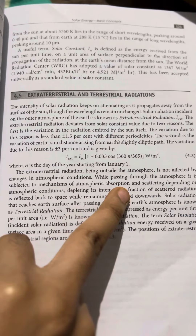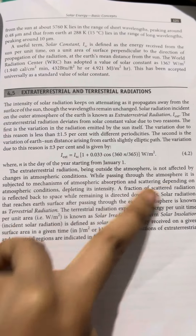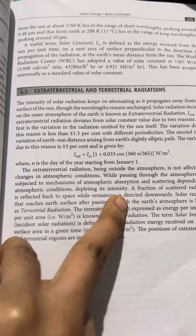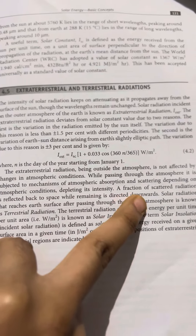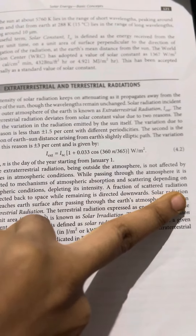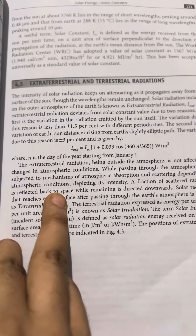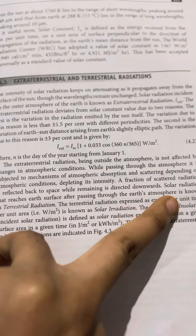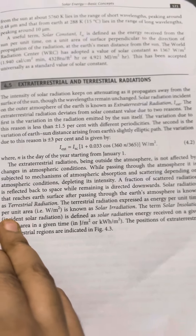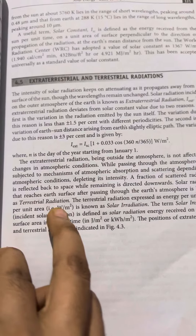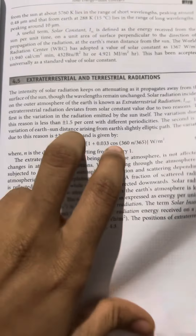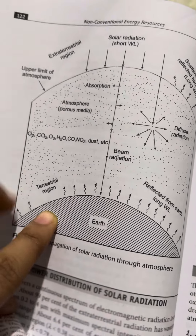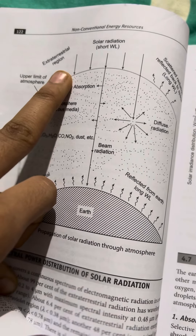While passing through the atmosphere, solar radiation is subjected to the mechanisms of atmospheric absorption and scattering. Depending on climatic conditions and the angle of incidence, a fraction of scattered radiation is reflected back to space while the remaining is directed onwards. To clarify: extraterrestrial radiation is outside the atmosphere, while terrestrial radiation is inside.